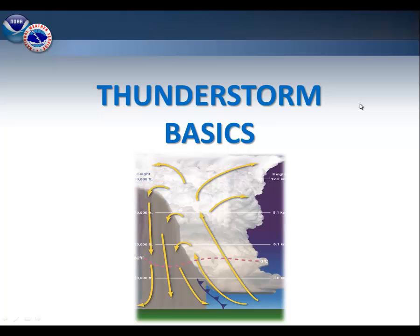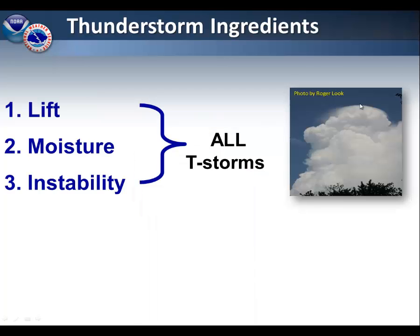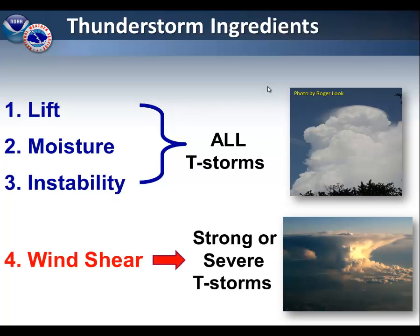In this part of our training, we'll talk about the basics of what goes into creating thunderstorms. All thunderstorms need three ingredients to get going: lift, moisture, and instability. However, strong to severe thunderstorms have a fourth element as well — wind shear. We'll talk about these individually coming up.